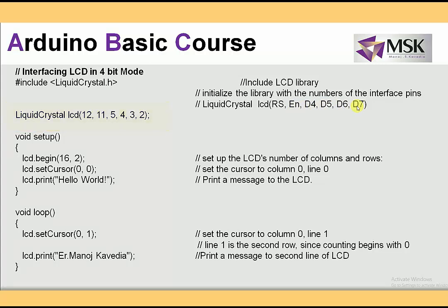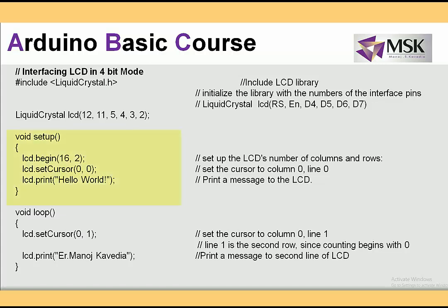In 4-bit mode, the arguments passed to the LCD function are: register select (RS), enable (EN), D4, D5, D6, and D7. Before setup, I create an object of the LiquidCrystal class called lcd. In setup, I call lcd.begin(16, 2), which tells the library the LCD is 16 columns and 2 rows. Then I use setCursor(0, 0) to place the cursor at the first row, first column.